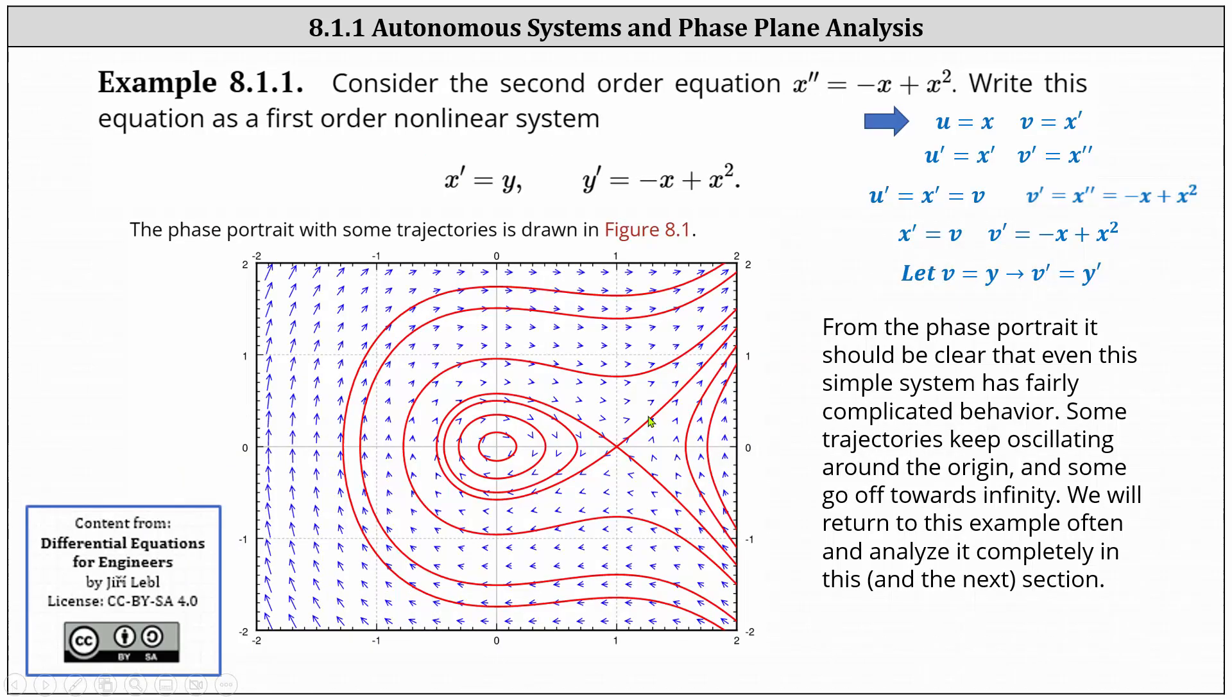Now let's consider an example. Let's consider the second order equation x'' = -x + x². We're first asked to write the equation as a first order system, which is given as x' = y and y' = -x + x².